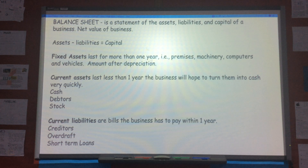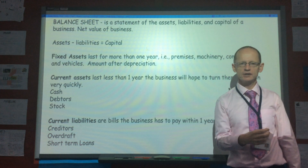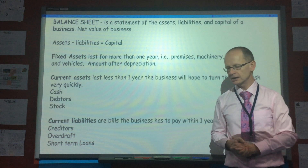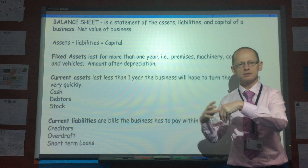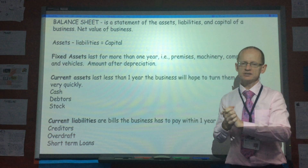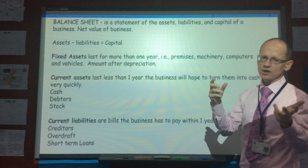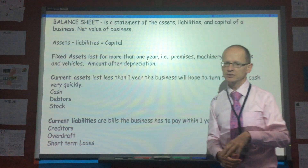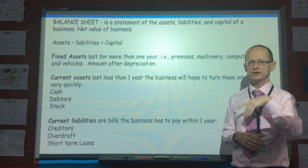Today we're going to look at something called the balance sheet. The balance sheet lists all the assets — things basically that the company owns — liabilities, money which the business owes, and the capital in the business, i.e., how is the business financed? The balance sheet should end up showing the following: assets minus liabilities equals capital, hence why it's called a balance sheet.